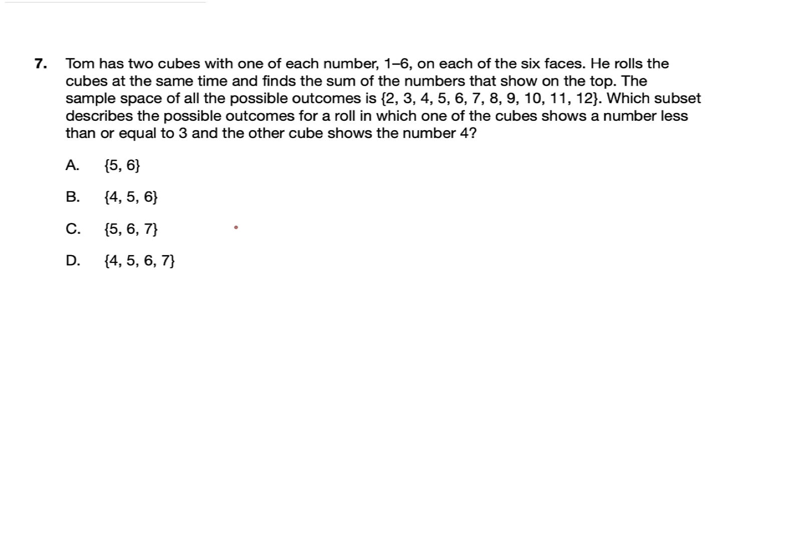When they say that Tom has two cubes numbered 1 to 6, they actually mean that Tom has two dice. We all know with a dice it has the numbers 1 through 6 on the faces. They're saying that he rolls the cubes at the same time. So suppose Tom throws two ones, 1 plus 1 is 2. That's where they got the 2 from. Suppose he throws a 1 and a 2, that would give you a 3.